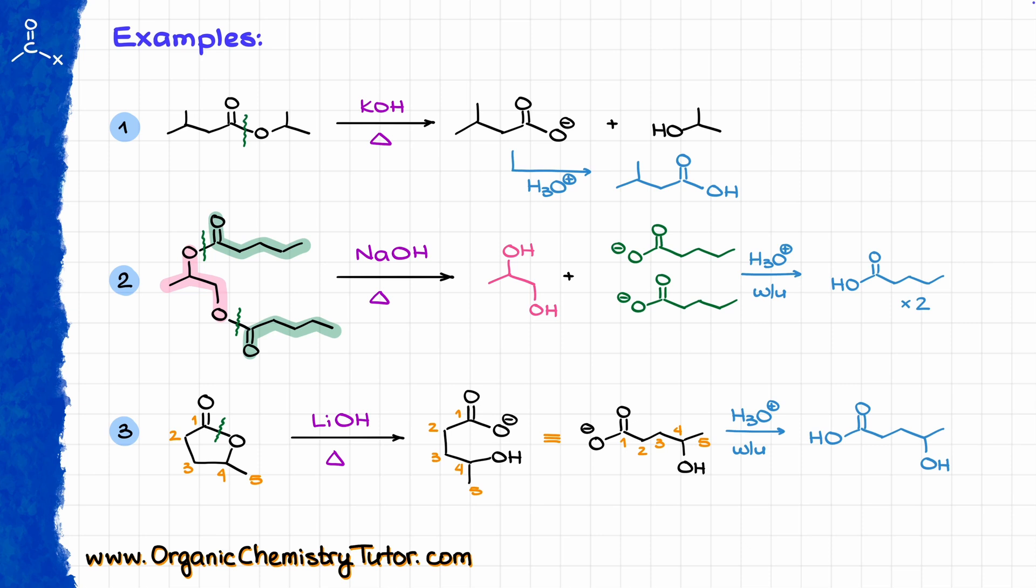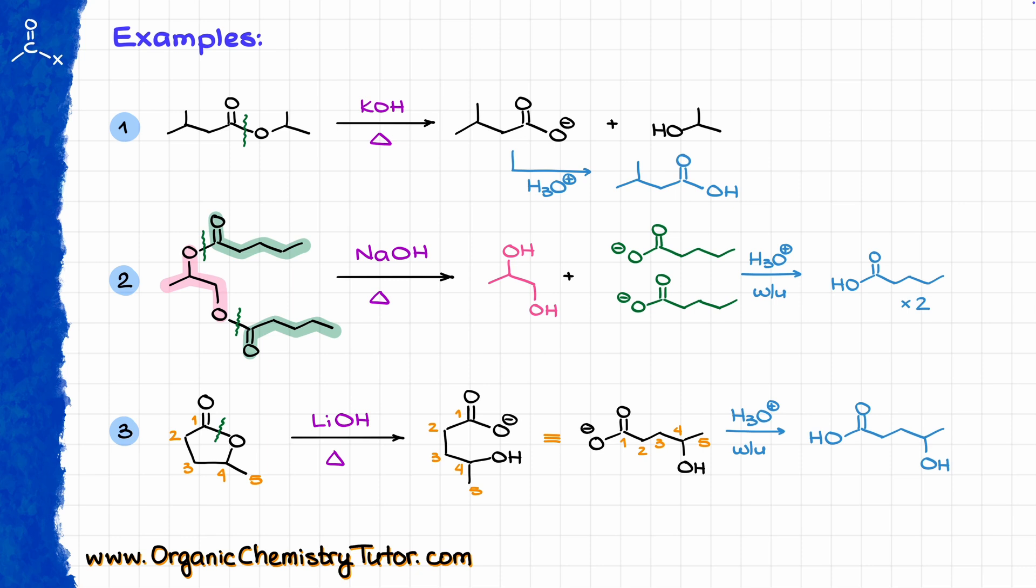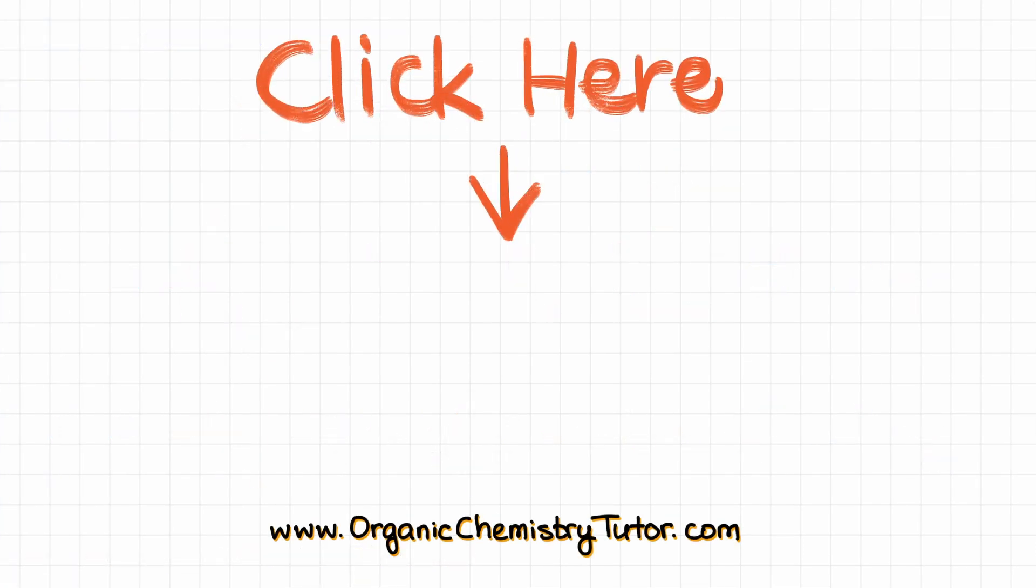So, as you can see, saponification might have a very scary name, but in reality, it's a very simple organic reaction that gives you carboxylic acid and an alcohol from an ester. That's it. And as always, thank you for watching. If you learned something new today, you can always tell me that by hitting the like button and leaving me a comment below. Check out this video, and I will see you next time.